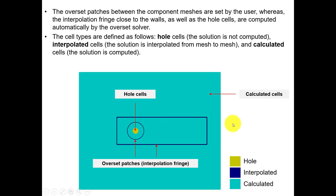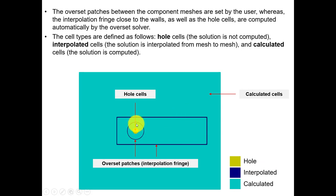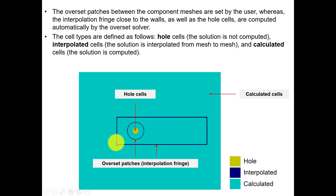The solver will automatically create hole cells, interpolated cells, donors, receptors, and calculated cells. Remember from the previous slides, there was an interpolation fringe - everything is done by the solver automatically. The user only needs to create the overset patch, and the solver handles the interpolation fringe.